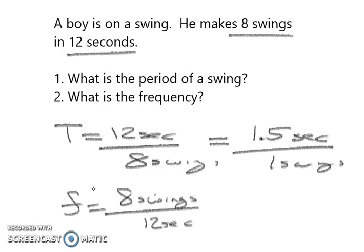Okay, when you do this and you make this calculation, you end up getting 8 over 12, which is 0.66. Now the units would be 1 over seconds, but this is also called a hertz. So it makes two-thirds of a swing for every one second. And that's how you calculate frequency.